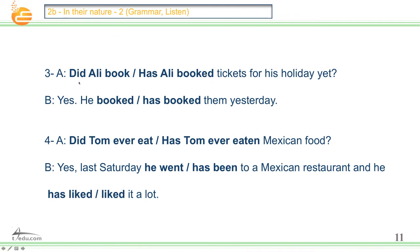Number three: 'Did Ali book' or 'has Ali booked' tickets for his holiday yet? Yes, he 'booked' or 'has booked' them yesterday. Number four: 'Did Tom ever eat' or 'has Tom ever eaten' Mexican food? Yes, last Saturday he 'went' or 'has been' to a Mexican restaurant, and he 'liked' or 'has liked' it a lot.